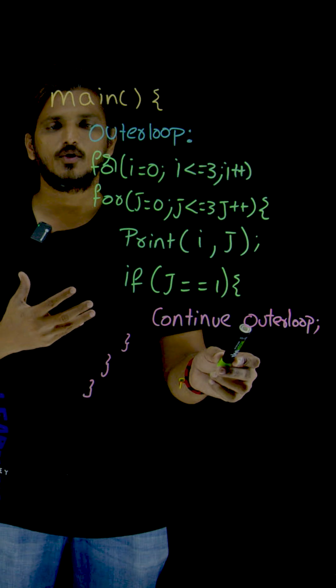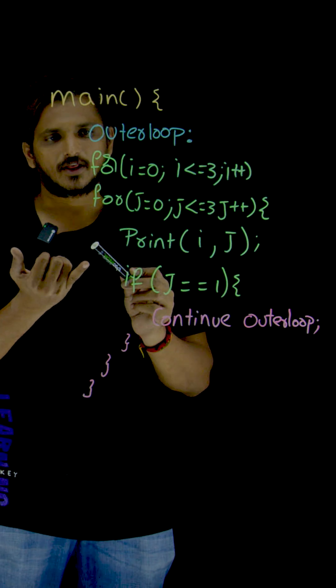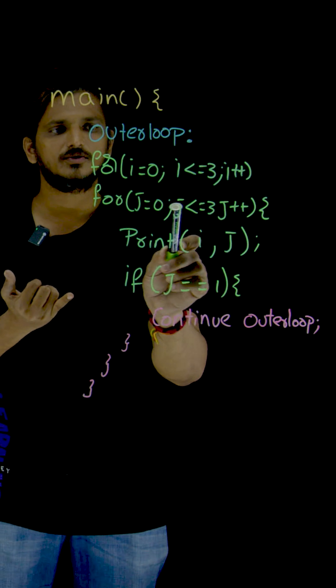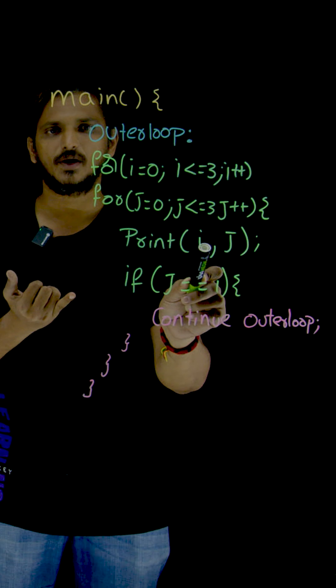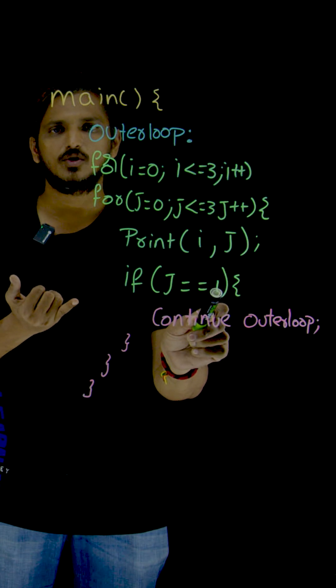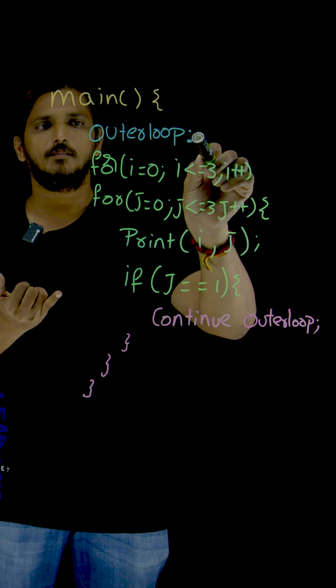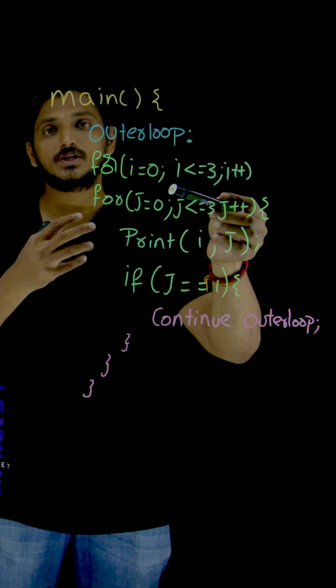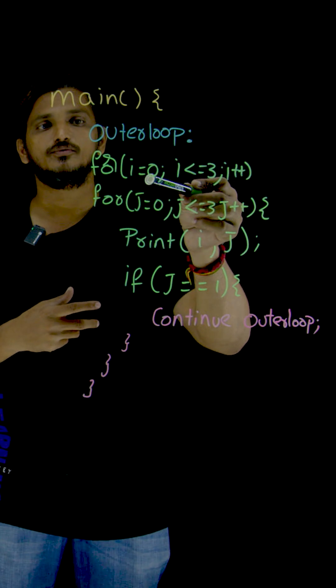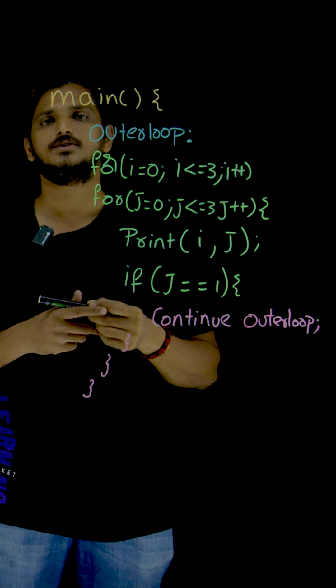So what's the output you are going to get in this program? For i is equal to 0, j is equal to 0, j is equal to 1 will be displayed. Whenever j is equal to 1, execution moving to the outer loop here. Means it is going to skip the remaining. So i is equal to 1 will be executed.